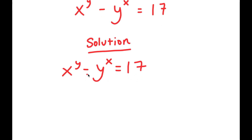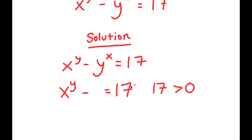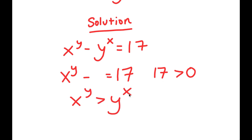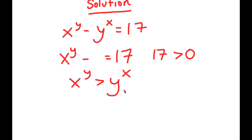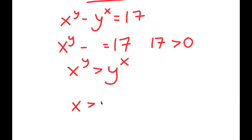Now, to start, just by looking at this equation, what can we infer? Notice how we have x to the power of y minus something is equal to 17, and 17 is greater than 0. This means x to the power of y is greater than y to the power of x, and this also must mean that x is greater than y, and y is greater than 0.